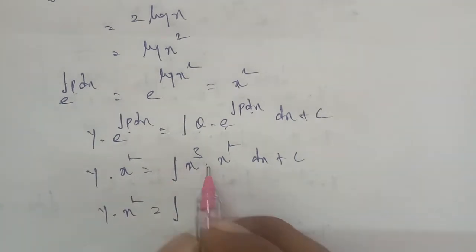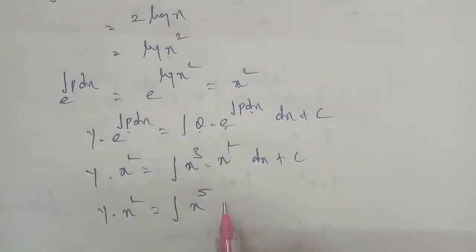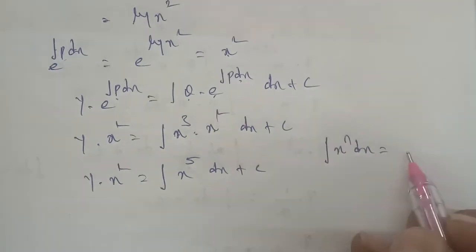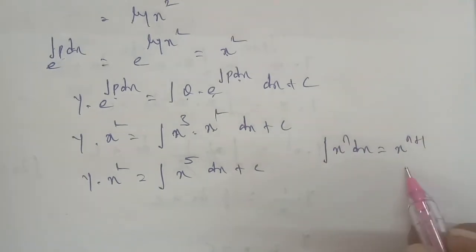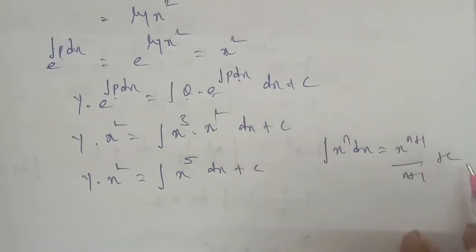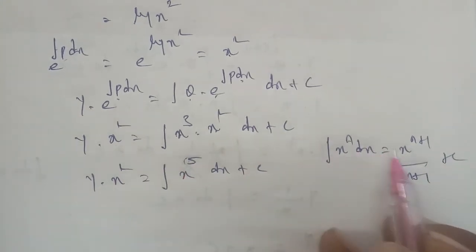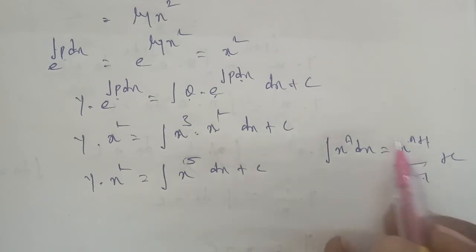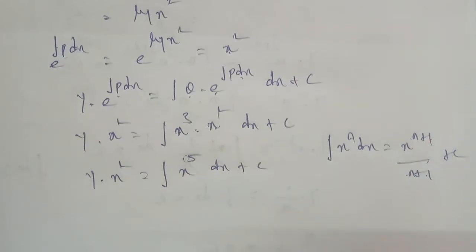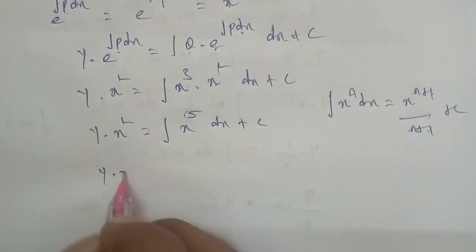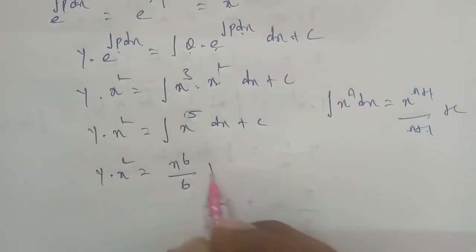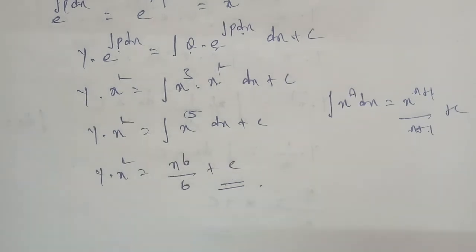So y into x squared equals integral of x power cube into x squared, which is x power 5, dx plus c. Using the direct formula x power n dx equals x power n plus 1 by n plus 1, we get y into x squared equals x power 6 by 6 plus c. That is the answer. Thank you.